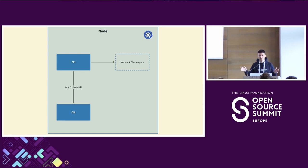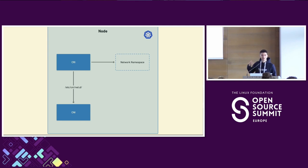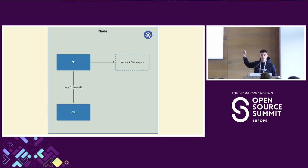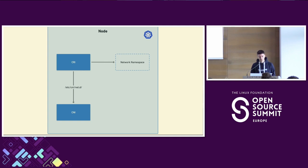The sandbox container doesn't really do anything — it's a very simple image that sleeps all the time. The reason it's useful is that it gives us a network namespace. The network namespace is essentially an isolation mechanism in the Linux kernel. It allows you to perform network configuration without affecting the actual system or other network namespaces. You can configure interfaces, routing tables, and so on. The responsibility of creating this namespace belongs to the CRI.